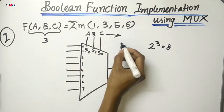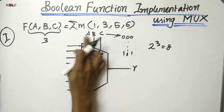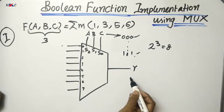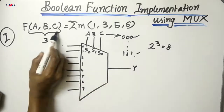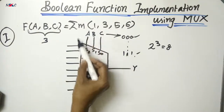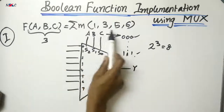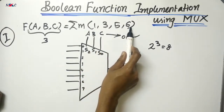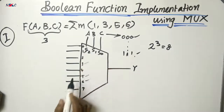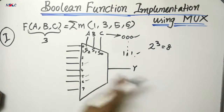In these three select lines, we apply all combinations. One particular combination selects one particular input, which appears at the output. Since the number of variables equals the number of select lines, the circuit implementation is very simple. We connect the input terminals corresponding to the min terms — that is, 1, 3, 5, 6 — to logic HIGH (1), and the remaining input terminals to logic LOW (0). Then we obtain the required function at the output.